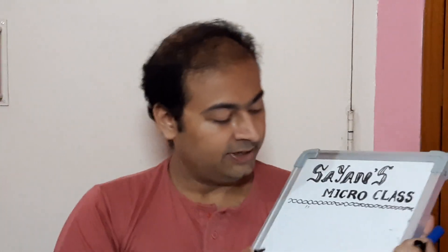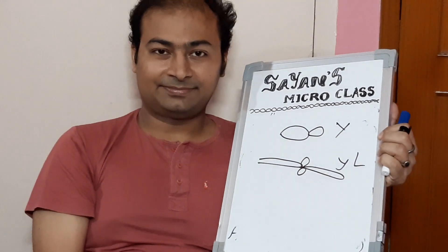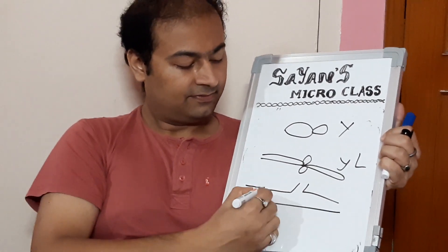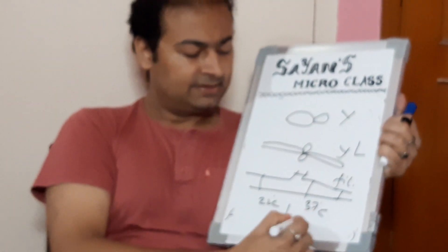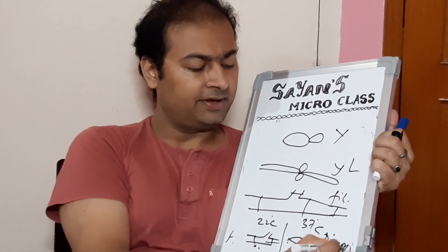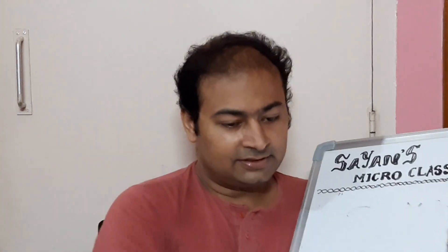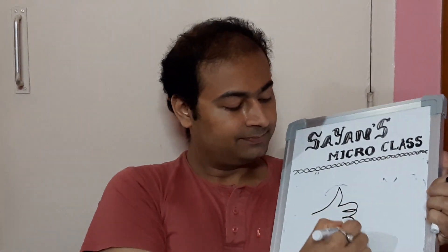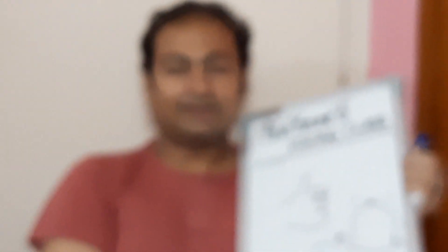This is all for today. In the next class, we will study something more about fungus. The take-home points are: yeast, yeast-like, filamentous, and dimorphic — which shows different morphologies at different temperatures. Keep liking the videos, subscribe, and press the bell icon. Thank you. Good evening. Take care.